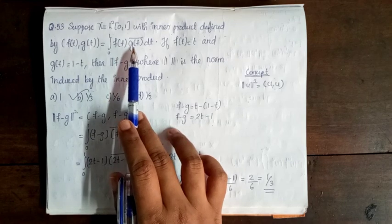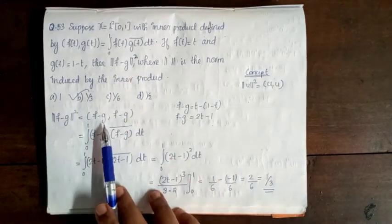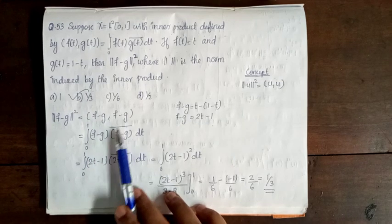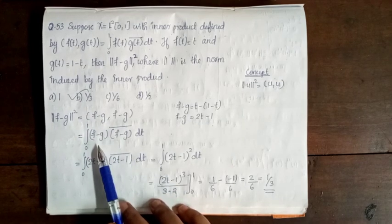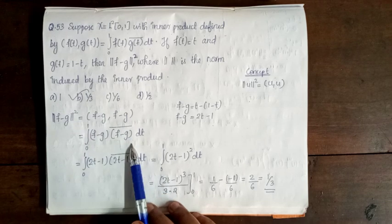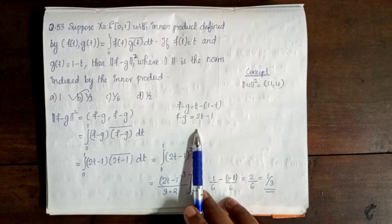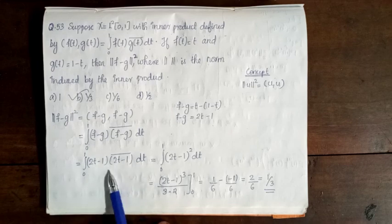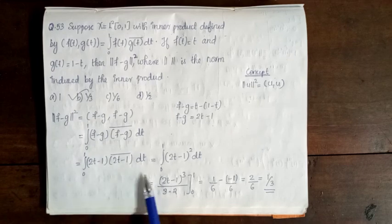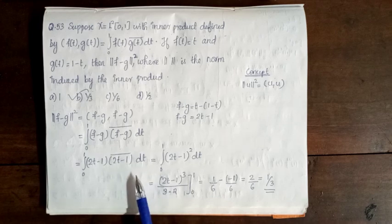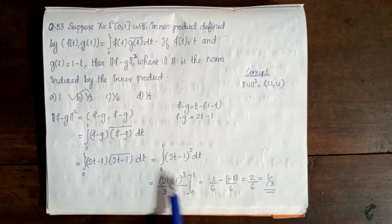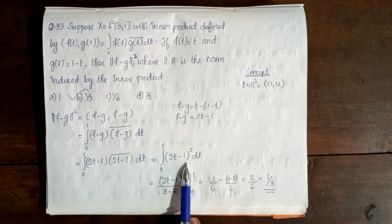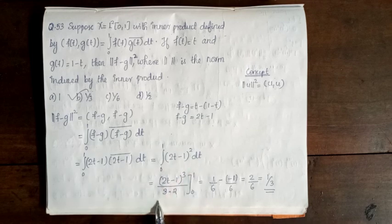The inner product is defined as integral from 0 to 1 of f(t) into conjugate of g(t) dt. Therefore ⟨f − g, f − g⟩ = integral from 0 to 1 of (f − g) into conjugate of (f − g) dt, where f − g = 2t − 1.